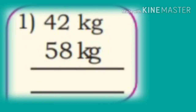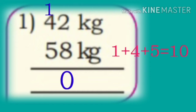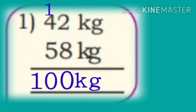First, add the following: 42 kg plus 58 kg. Add 2 plus 8 is 10 — write 0 in the units place and carry 1 forward to the tens place. Add tens place: 1 plus 4 plus 5 is 10. So the answer is 100 kg.